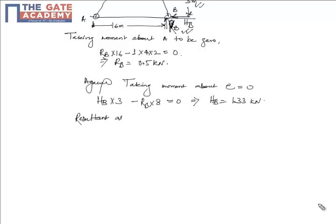Resultant at B would be 0.5 square plus 1.33 square. We get 1.42 kN. Hence the answer.